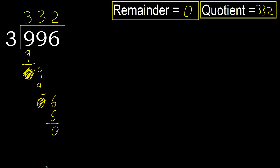Okay. Therefore, 996 divided by 3 equals 332.